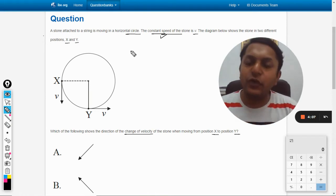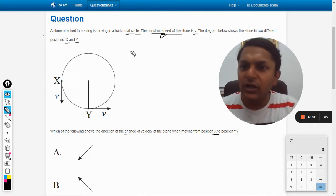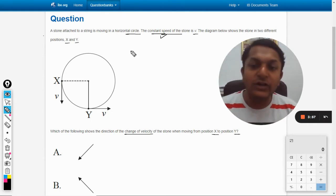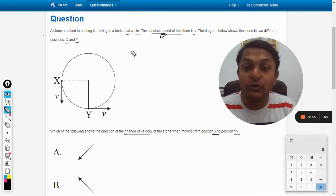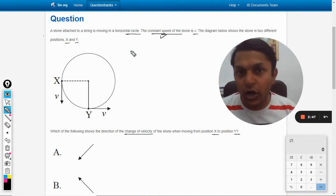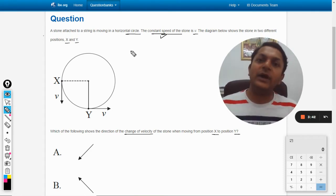My dear students, please be careful about the terms we are using here. Earlier the question says that the stone is moving at constant speed, and now it's asking about change in velocity. Speed has not changed at all, but the velocity has changed because velocity is a vector and the direction of the stone has changed. That is why the velocity has changed.